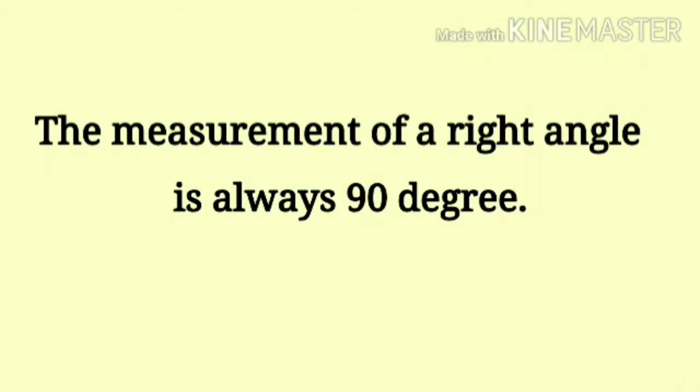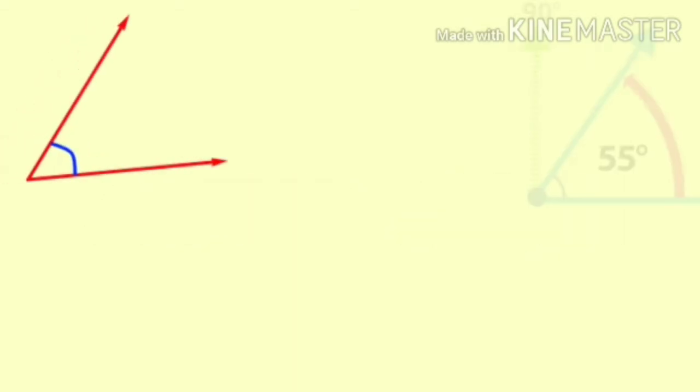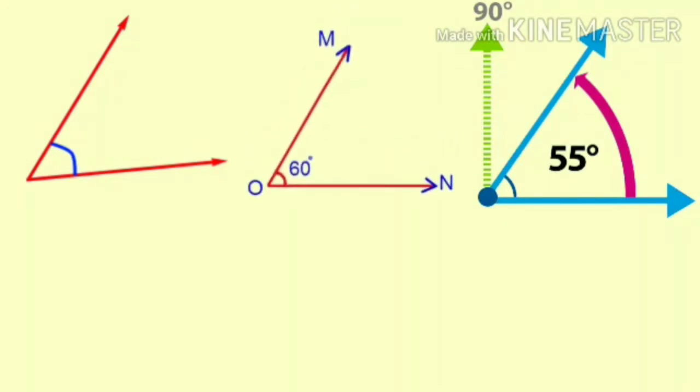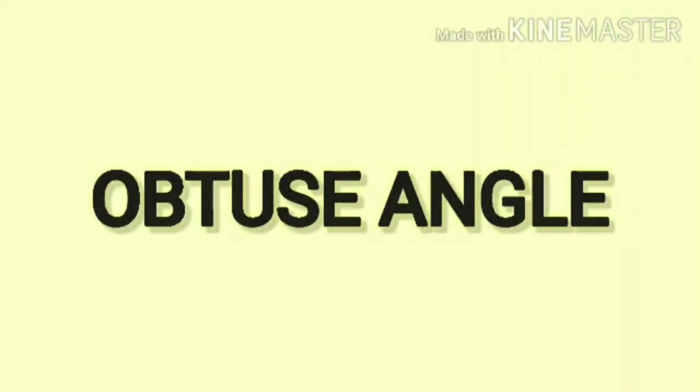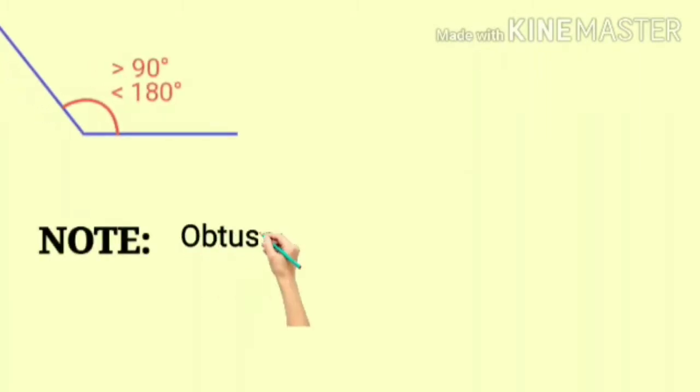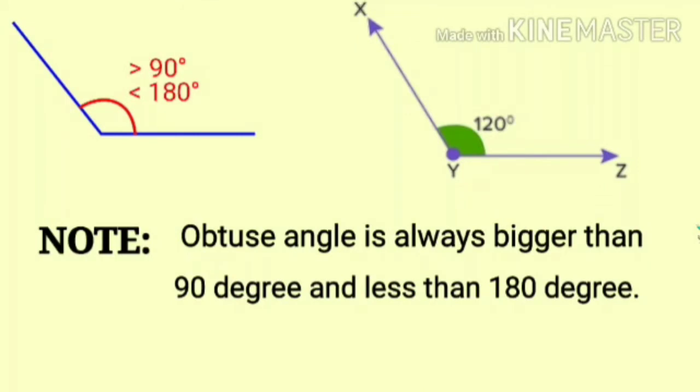Now let's move towards the second type of angle, that is acute angle. An angle which is smaller than a right angle is called an acute angle. Now third type is obtuse angle. An angle which is bigger than a right angle is called an obtuse angle.